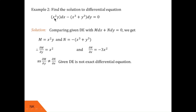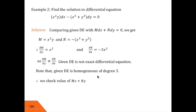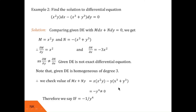Now we observe that every term of this differential equation is of degree 3, so it is a homogeneous differential equation. We find mx plus ny. If it is not equal to 0, the integrating factor is 1 upon mx plus ny. Multiplying M with x and N with y and adding, we get minus y⁴. You can pause the video and check the calculation. Since this is not equal to 0, the corresponding integrating factor is 1 upon mx plus ny, that is −1/y⁴.